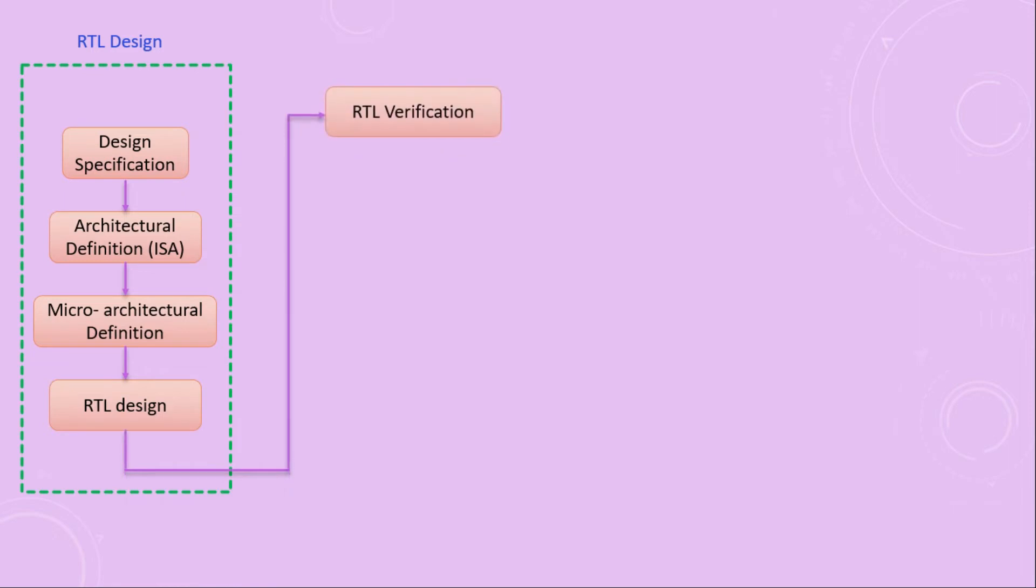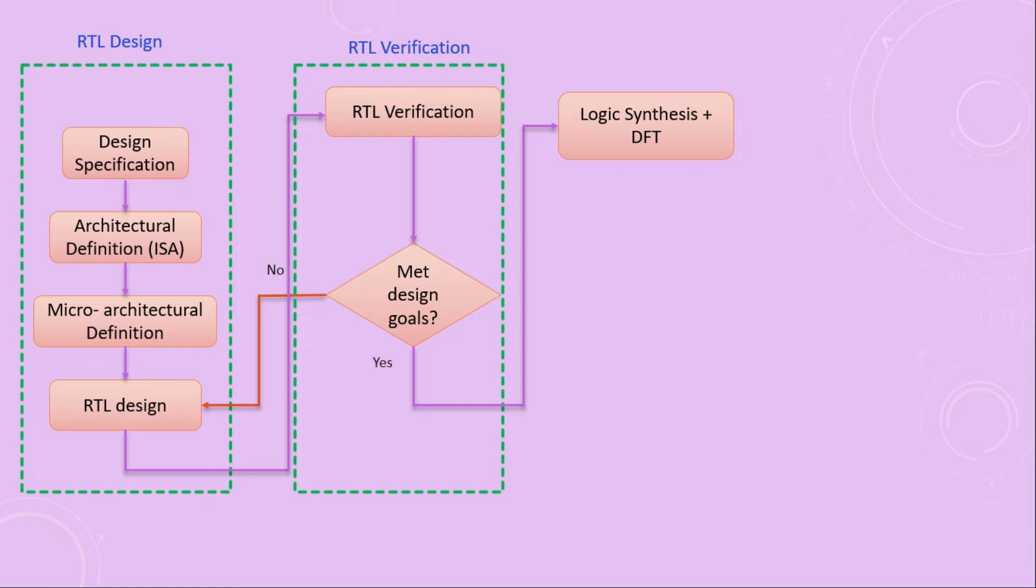And this entire flow is called RTL design, and output of this is basically the netlist at RT level, which will go to the next level, which is RTL verification. This RTL verification is a step where the verification engineer makes sure that RTL design and the output of RTL design is proper by giving many test cases. He has to cover almost all the test cases so that he can verify that the functionality of the RTL design is proper, as well as the design goals are met. If one of them is wrong, it will be sent back to the RTL design. So he will make sure that whether the design goals are met. If it is no, then it will be sent back to the RTL design. If it is yes, the design goals are met, it will go to the next level, which is logic synthesis plus the design for testability. The second step is basically called RTL verification, the entire flow.